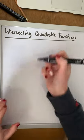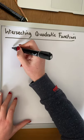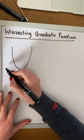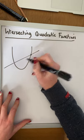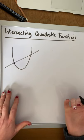We can have a quadratic function intersecting with a linear function. So for example, if we have a quadratic intersecting with a linear, we have two possible points of intersection.